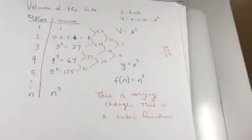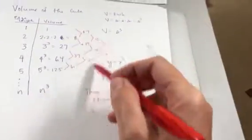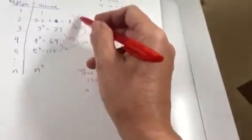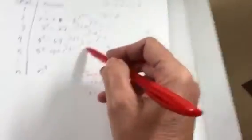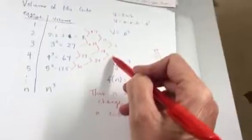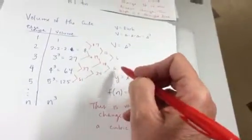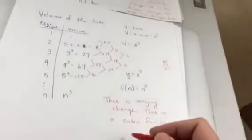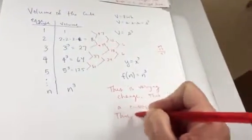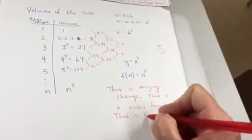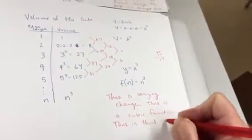It looks like when I get to the third level, if I call this level 1, this is level 2, this is level 3. When I get to the third level, I end up with the same number. This is third common difference, or common third difference.